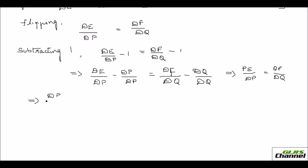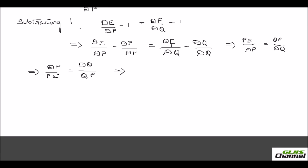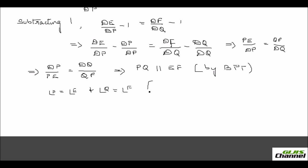Since these two sides are in proportion, DP over PE equals DQ over QF. Since DP over PE equals DQ over QF, I can say that line PQ is parallel to EF — the third side. For this, I used the Basic Proportionality Theorem (BPT). Since these two lines are parallel, angle P equals angle E and angle Q equals angle F, because they are corresponding angles of parallel lines.